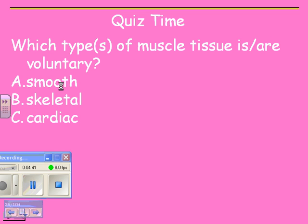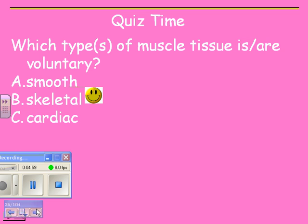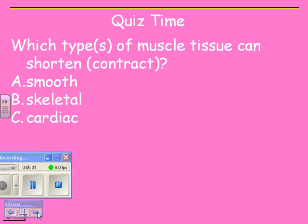Which type of muscle tissue is voluntary? Can you decide that you want to make your heart stop? No. So it's definitely not the heart. Can you decide that you want to make your blood vessels open or close? No — so it's not smooth. Can you decide to talk or walk? Yes. So it's skeletal. Which type of muscle tissue can shorten or contract? This is a trick question — all of them. All of them can shorten.